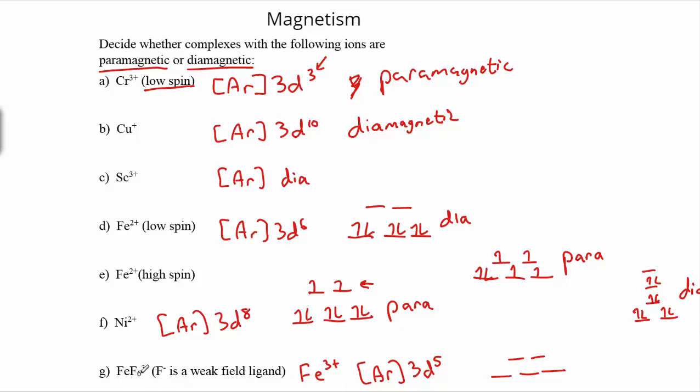Finally, in FeF₆³⁻, we've got Fe³⁺ there. We can infer with the six negatively charged fluoride ions that to end up with an overall negative 3 charge, iron must be plus 3.